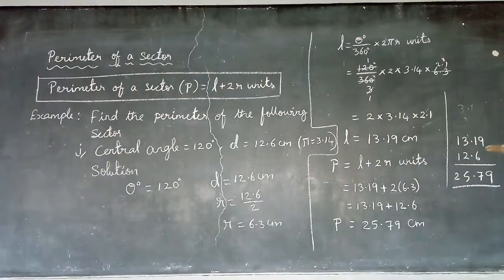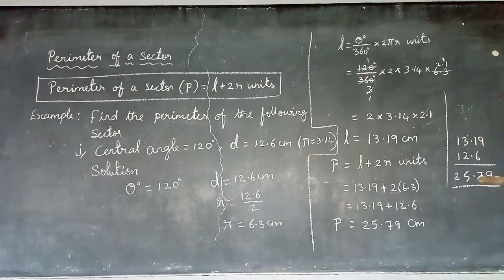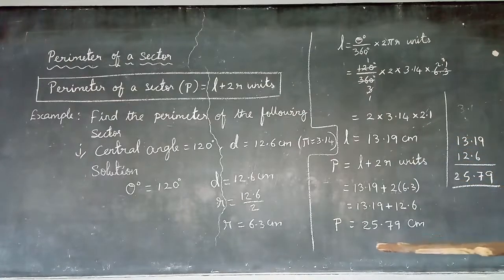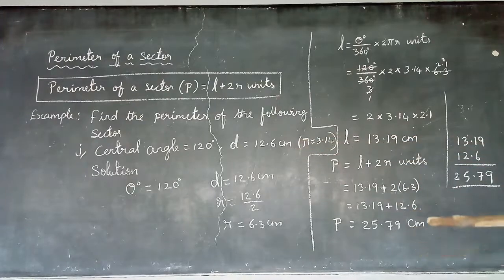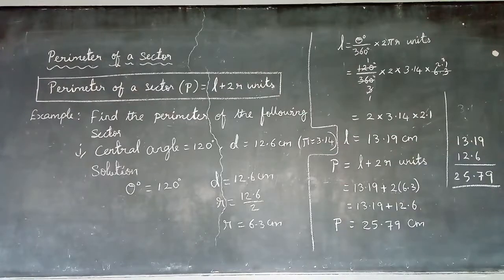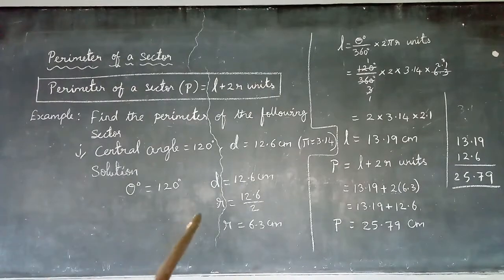Arranging the decimal addition properly: 13.19 + 12.60 = 25.79. So the perimeter equals 25.79 centimeters. Based on this concept, students should try other sums where the diameter is given.